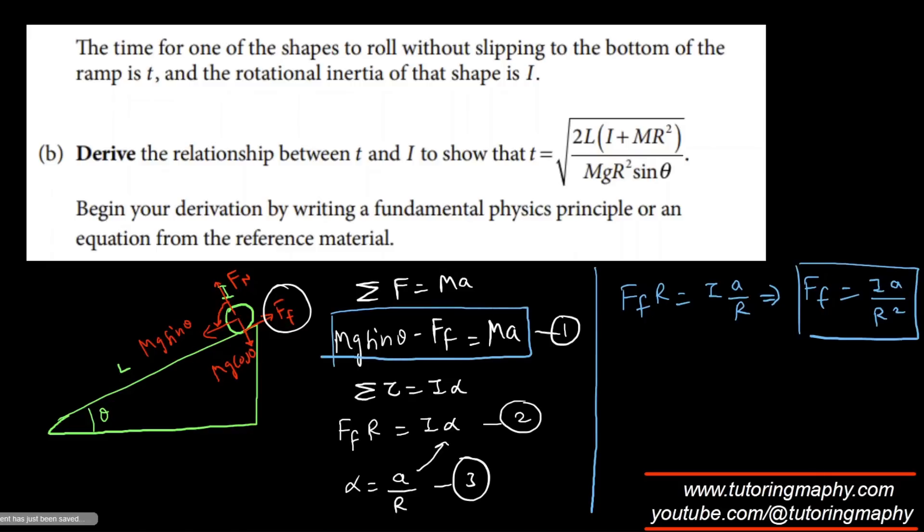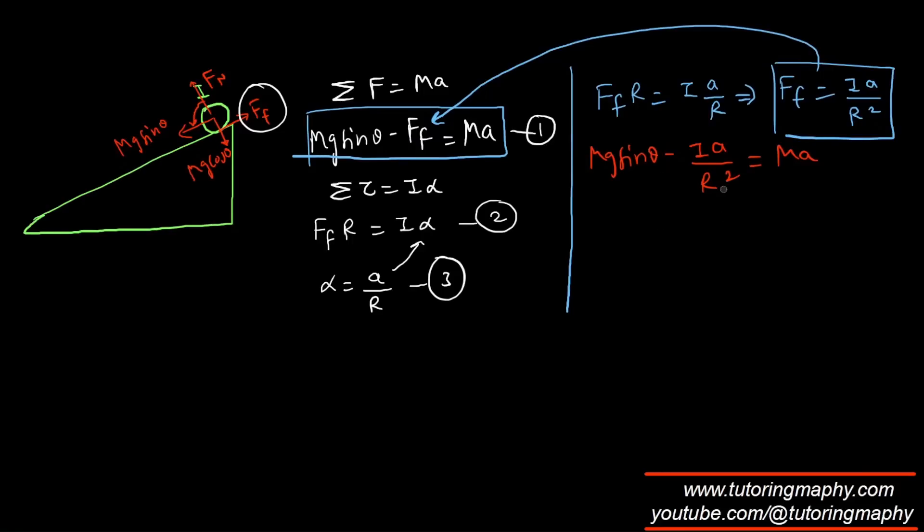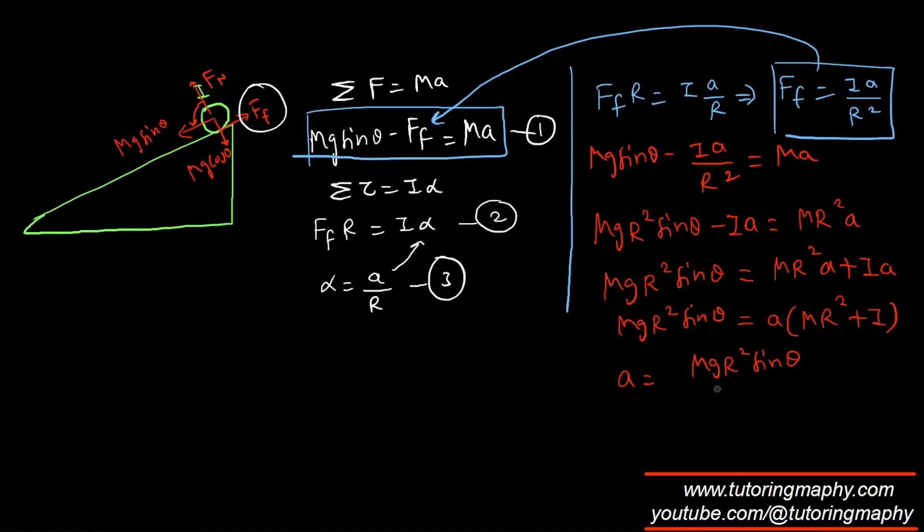And this is the next equation. I'm going to substitute this FF over here. So this is going to look like mg sin theta minus IA over R squared equals MA. Let's isolate for A. Multiplying R squared both sides, so MgR squared sin theta minus IA equals MR squared A. So this will be MgR squared sin theta, and adding IA both sides, it will be MR squared A plus IA. Taking A as a common factor, it will be MR squared plus I equals MgR squared sin theta. So A will be equal to MgR squared sin theta over I plus MR squared.